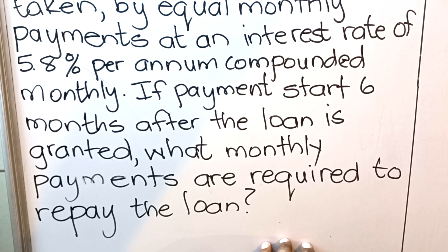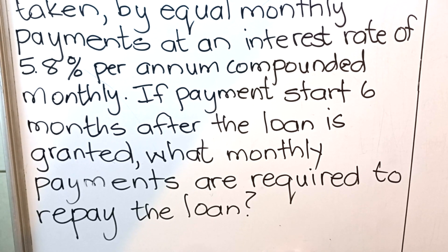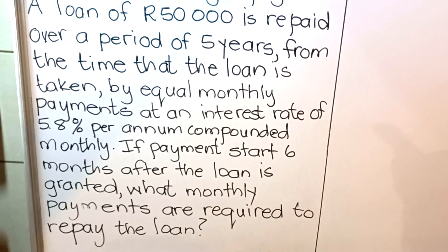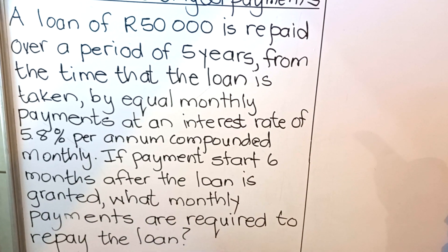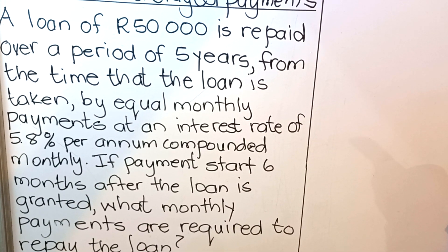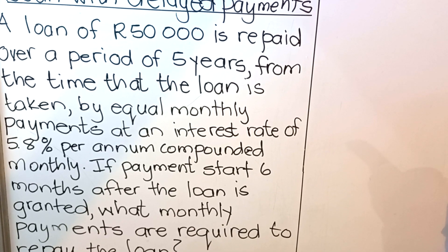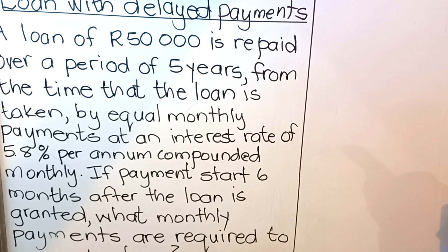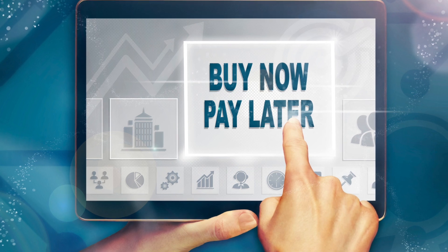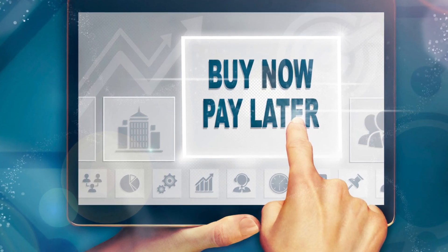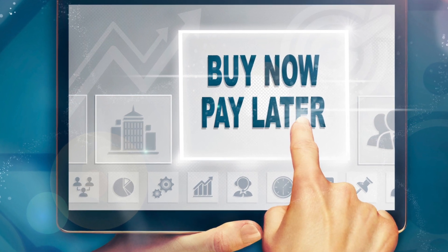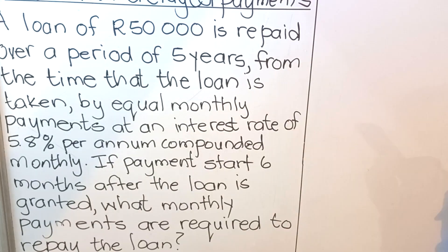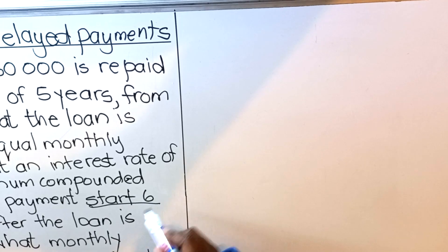Somebody takes a loan of R50,000 and the loan is expected to be paid in five years, but the person doesn't start paying the loan — they start paying six months later. With loans, you are expected to pay one month later. So if you are paying six months later, it means there are five months that you are not paying. It's like those advertisements where they say take a TV and pay in five months — they are actually going to charge you interest for those five months.